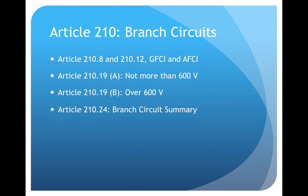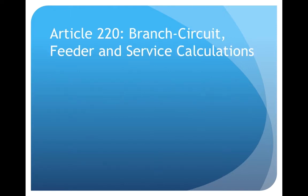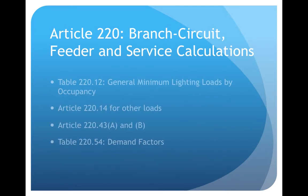Article 210: Branch Circuits. Look at 210.8 and 210.12 for GFCIs and AFCIs. Also look at 210.19(A) and (B), and section 210.24 along with Table 210.24 Branch Circuit Summary. Make sure you go over those and put a tab on them, as you may see problems referencing these sections of Article 210.